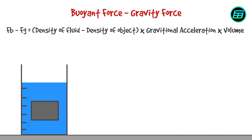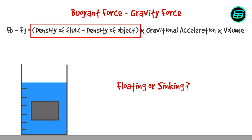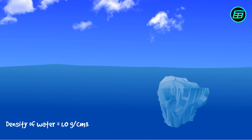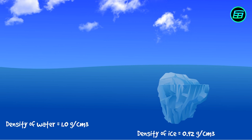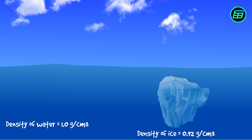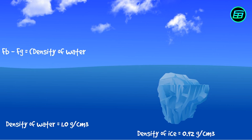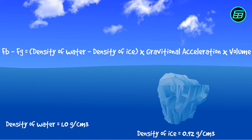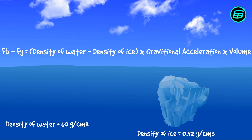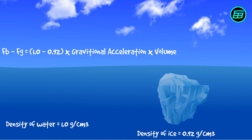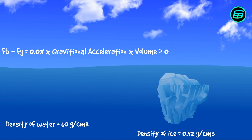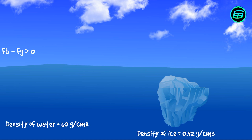So we can see that floating or sinking depends just on the densities. The density of water is about 1 g/cm³ at 25°C, whereas the density of ice is about 0.92 g/cm³ at 0°C. Buoyant force minus gravity force equals (1 − 0.92) times gravitational acceleration times the volume of the object, which is greater than zero. We've shown that the buoyant force is greater than the gravity force, from which it follows that ice floats.